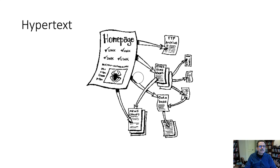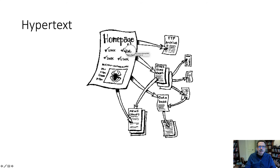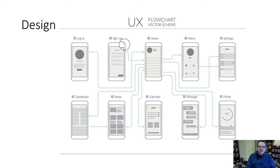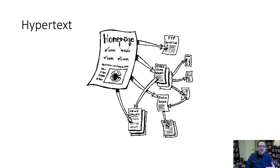Hypertext is another example — you click on text or an image and it takes you somewhere. You can think of hypertext as a state machine: you're in one state, a home page, you click a link, and it takes you to another page. Hypertext is very similar in principle to UX flow design — you have a presentation in front of you, you click on something as a transition from one state to another, moving from page to page.